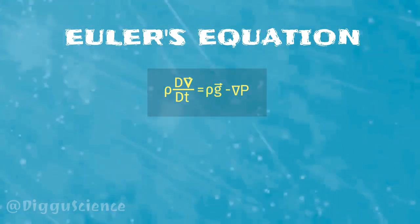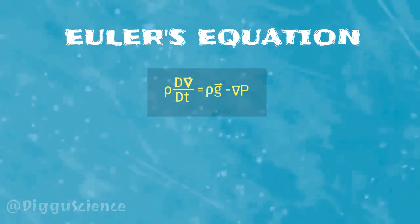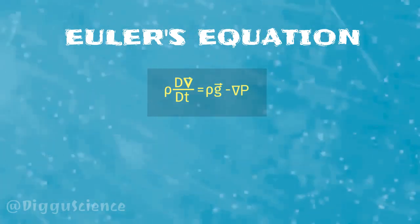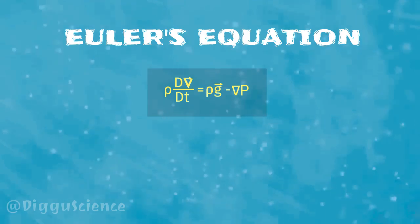Euler's equation for fluid flow can be written as rho multiplied by the material derivative of vector v with respect to time is equal to rho multiplied by vector g minus the grad of p.